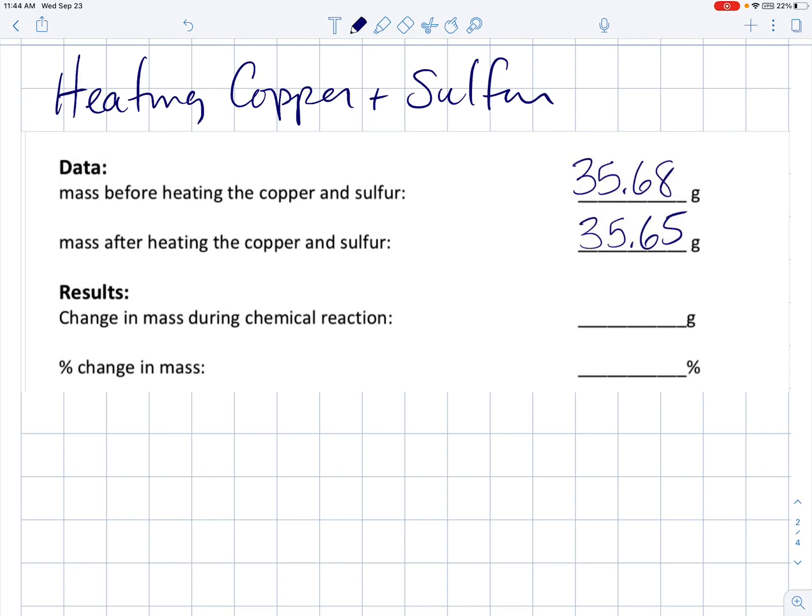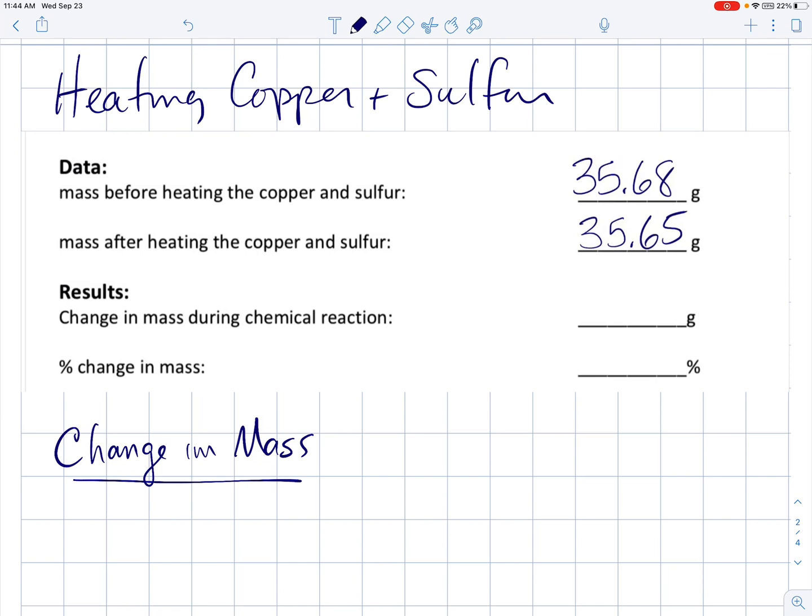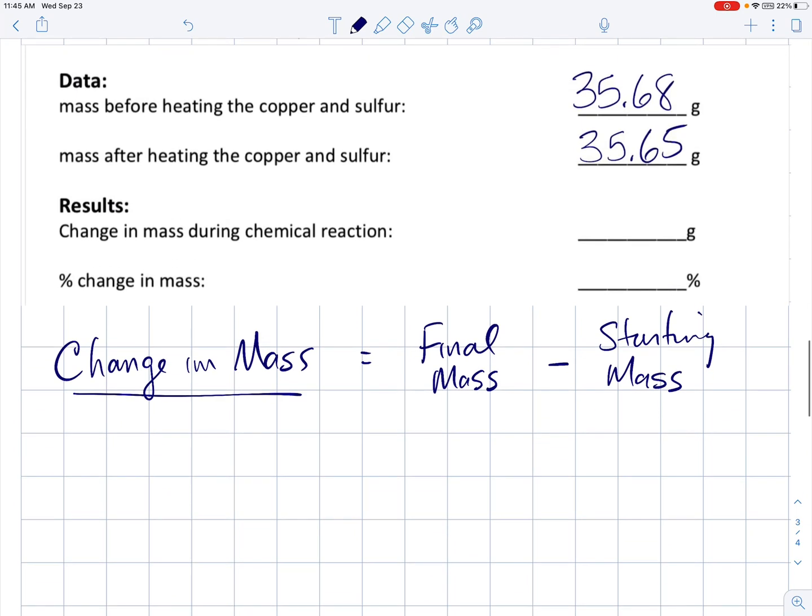So let's go ahead and calculate the change in mass. Now that may sound simple, change in mass, but there's actually a particular way you have to calculate this. The change in mass is always the final mass, so in this case the mass after we heated, minus the starting mass. So it's very important that you subtract like that, the final minus the starting. Don't just take the larger minus the smaller. It's always the final minus the starting.